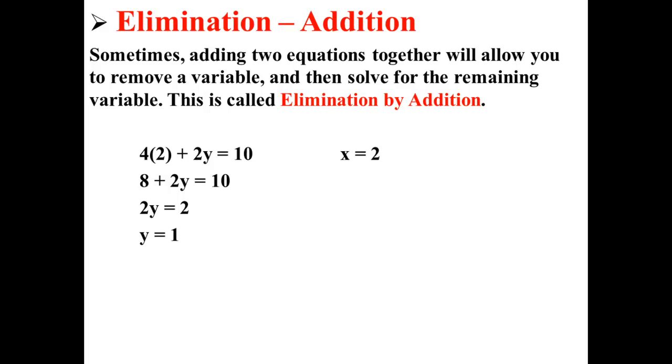So, our solution to this equation is the ordered pair (2, 1), where x is equal to 2 and y is equal to 1. And that is how you perform elimination by addition.